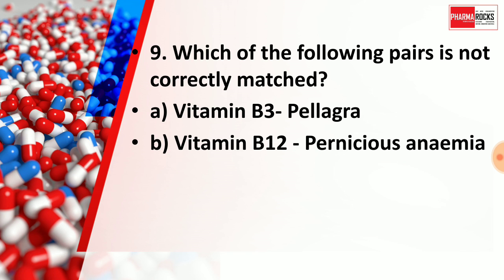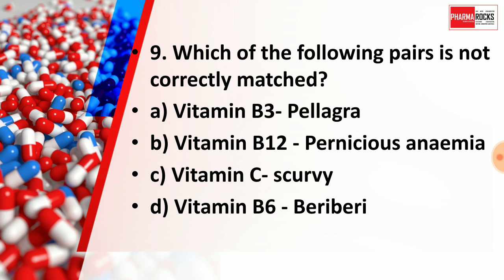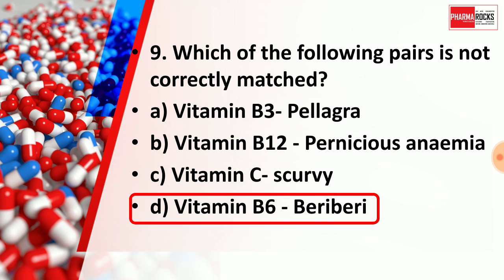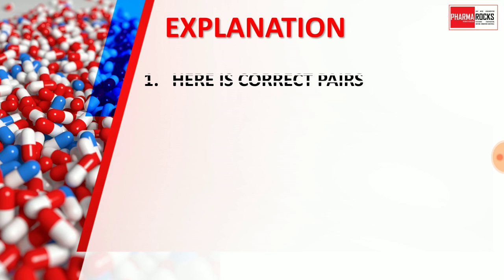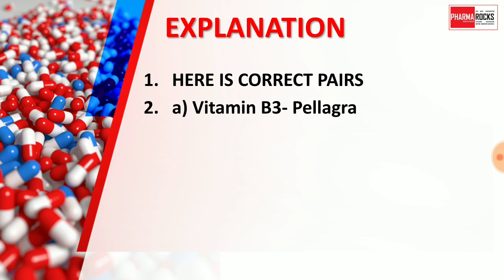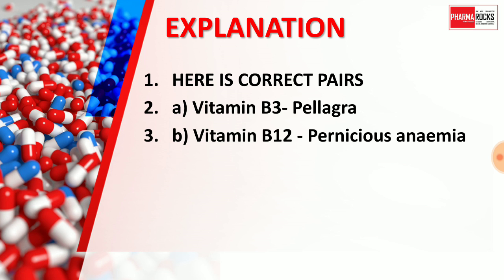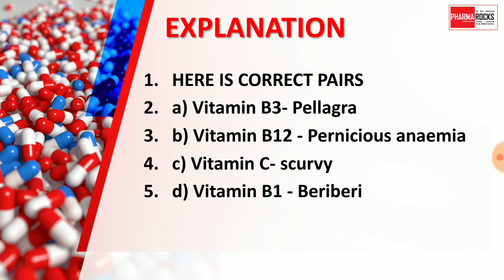The right answer for question 9 is Option D — the incorrect pair — Vitamin B6 paired with beriberi. Here are the correct pairs: Vitamin B3 (niacin) deficiency causes pellagra; Vitamin B12 deficiency causes pernicious anemia or megaloblastic anemia; Vitamin C deficiency causes scurvy; and Vitamin B1 (thiamine) deficiency causes beriberi — not Vitamin B6. So pair D is wrong in the question, and the correct pair is Vitamin B1 for beriberi.